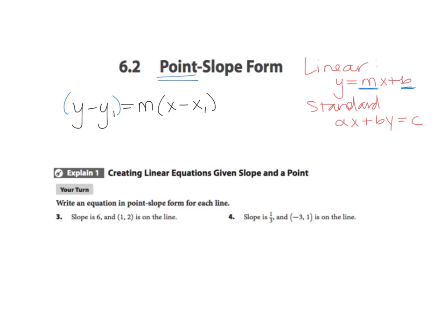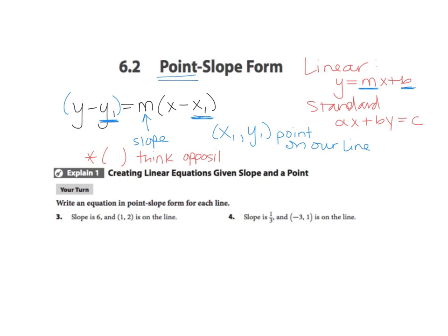Add some parentheses on this side. Notice now that your x and y are in parentheses. M stands for slope. This y1 and x1 are a point — x1 comma y1 is a point on our line. Because these are both minus signs, they're going to be opposite. When we see things in parentheses in an equation, we want to think opposite. You'll see what I mean when we go through an example.